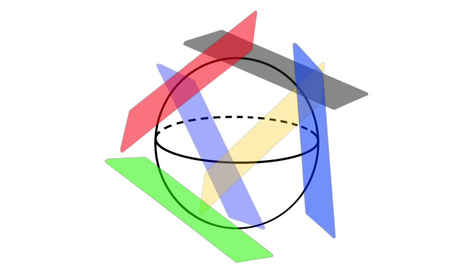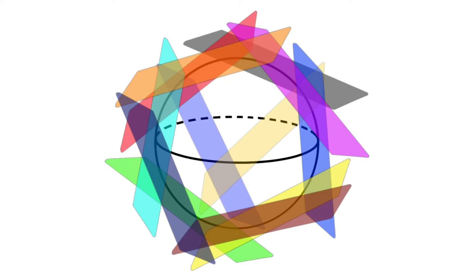If you think of all possible tangent spaces, you have yourself a tangent bundle of the manifold. Each point on this tangent bundle is described by 4 points instead of 2: 2 points for its position, and 2 more for its momentum.